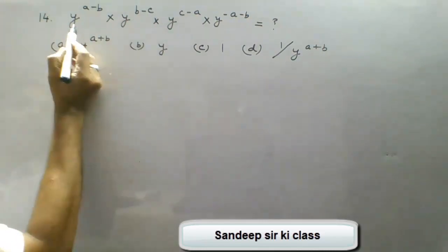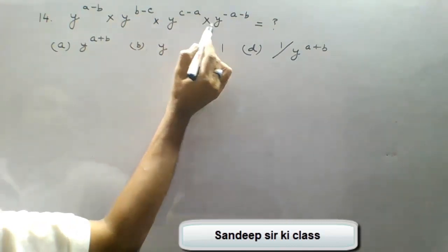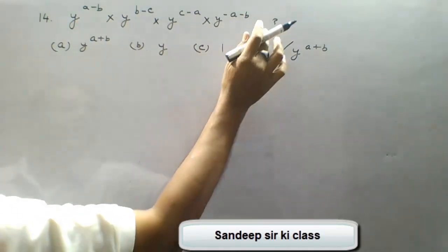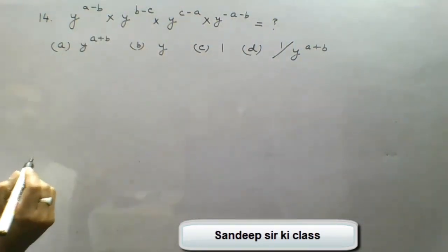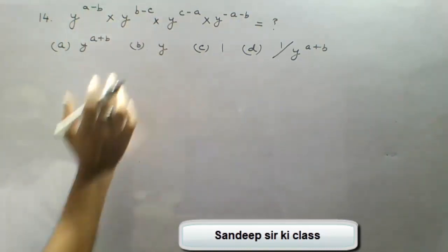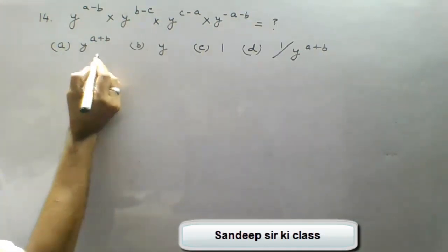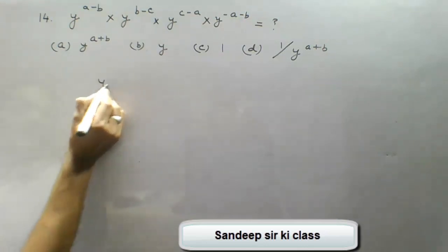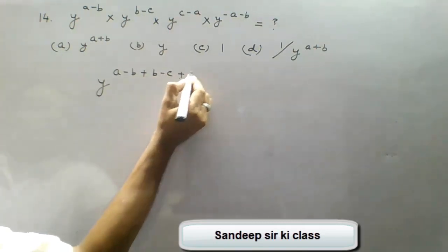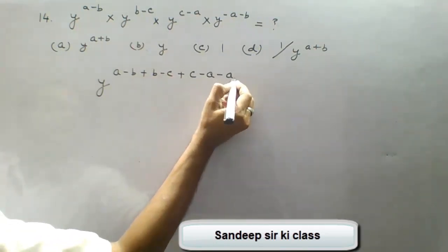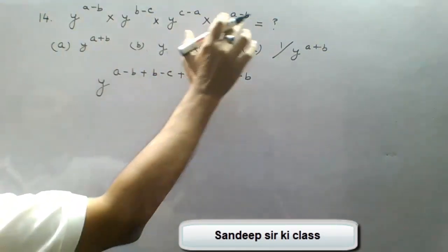Next question is: y to the power (a−b) into y to the power (b−c) into y to the power (c−a) into y to the power (−a−b) equals what? Now since the base is the same, in multiplication the powers are added. This expression can be written as y to the power (a−b) + (b−c) + (c−a) + (−a−b).